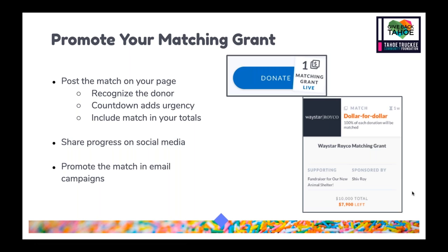Because of the impact a matching grant can have, you'll want to make sure you're promoting it if you've secured one. Relay to your donors that you are currently looking for a match or that you have secured one, and let them know the urgency — if your match is set for a certain day or time period, let them know that is the window you have to complete it. Share that information on social media and in all of your email campaigns.